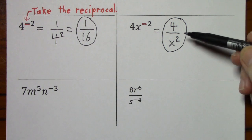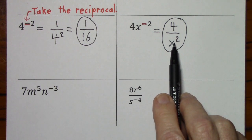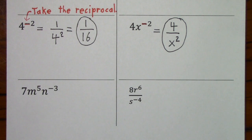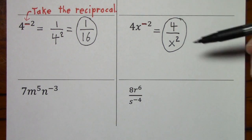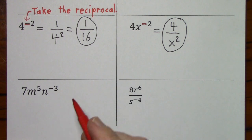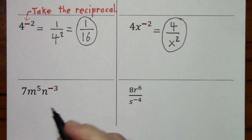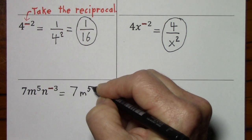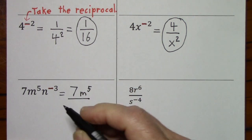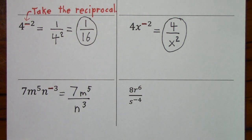The practice in mathematics is to write your answers with positive exponents only, unless you're dealing with scientific notation — that will be the next video. So whenever you have negative exponents, you need to rewrite with positive exponents. Down here, we have n to the negative three, so 7m to the fifth stays in the numerator, and n to the negative three shifts to the denominator and the exponent becomes positive.